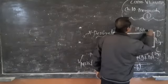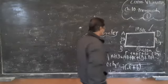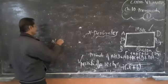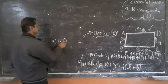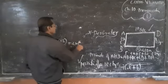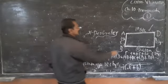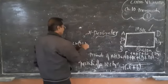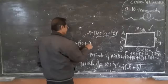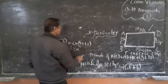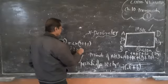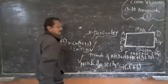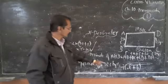That is the perimeter. Now using the formula 2(L + B): 2 into (10 + 5) = 2 into 15 = 30 cm. You get the same answer. So we can use the formula directly.